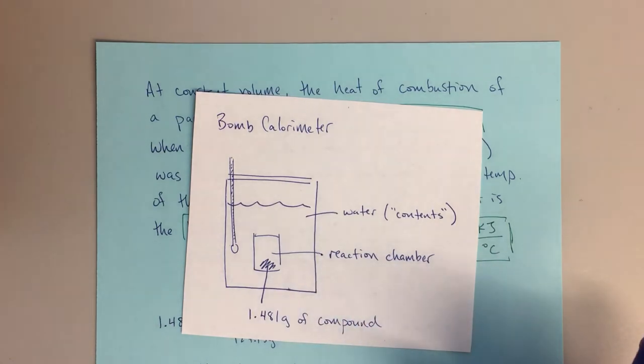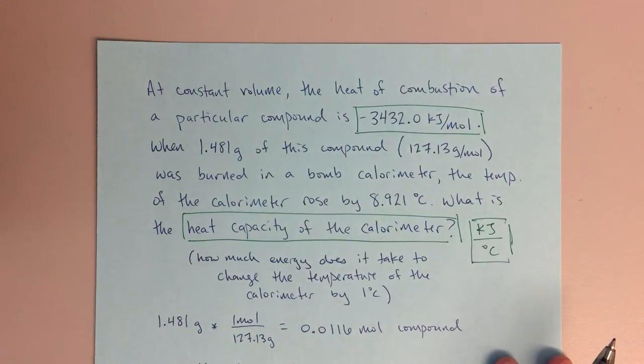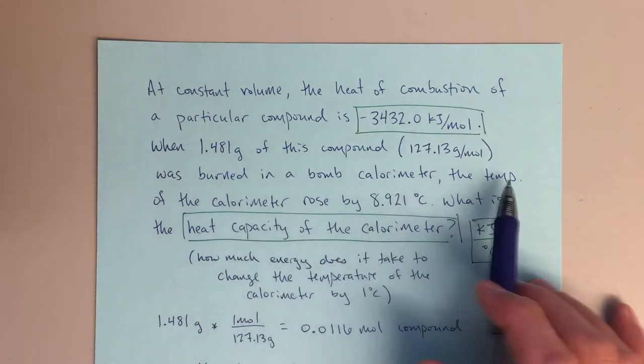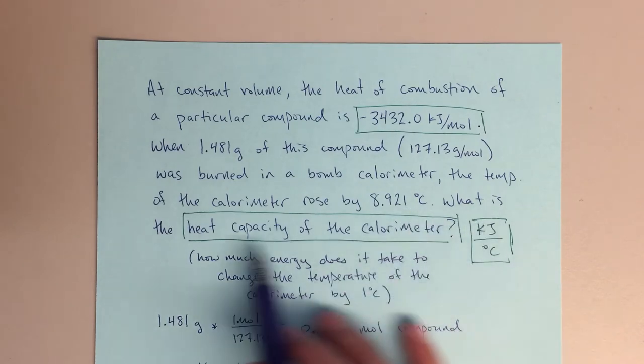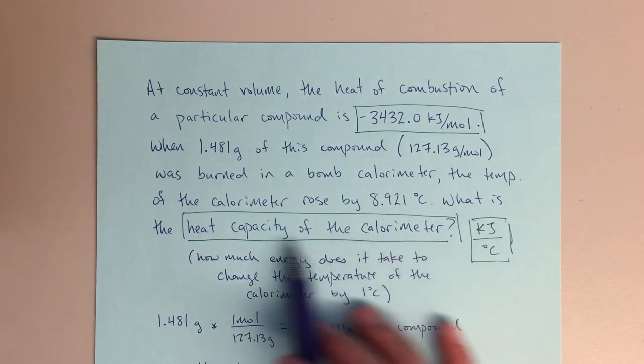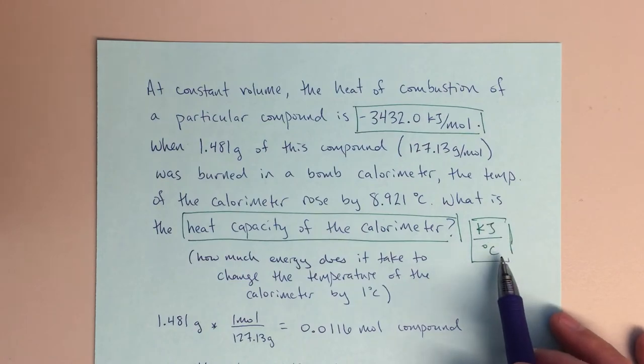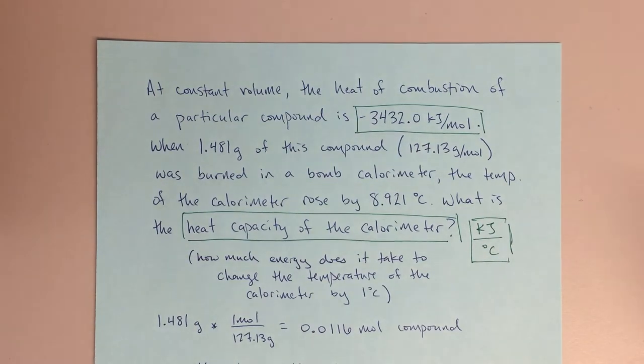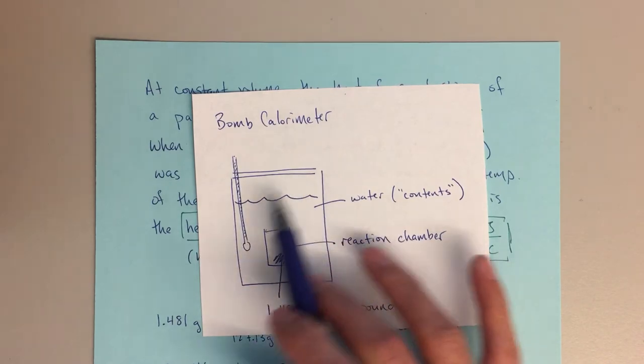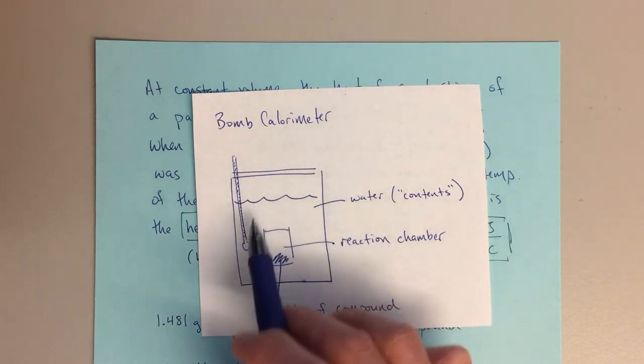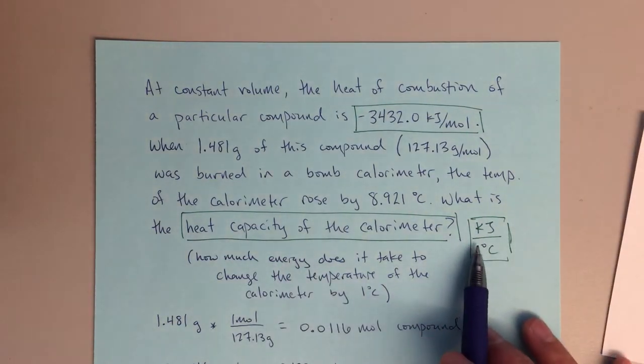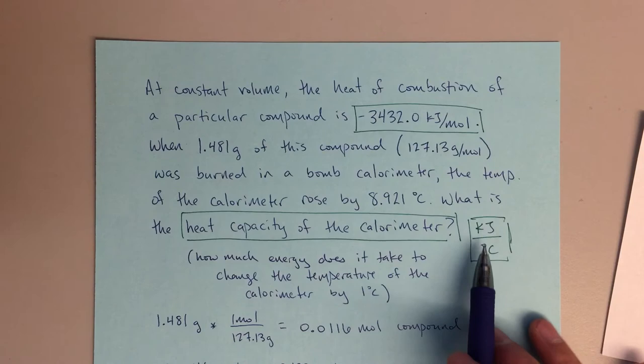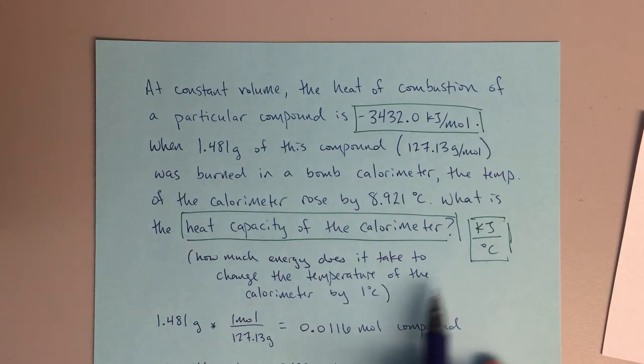That's actually what we're going to be solving for in this problem. The temperature of the calorimeter rose by 8.921 degrees Celsius. What is the heat capacity of the calorimeter? The heat capacity of the calorimeter in kilojoules per degree Celsius: for this entire system, how much energy does it take to raise the temperature by one degree Celsius? That's really what this question is asking, and that's really what a heat capacity tells us. It's the amount of energy required to raise the temperature by one degree Celsius, which is really the same as one degree Kelvin because of the delta T.